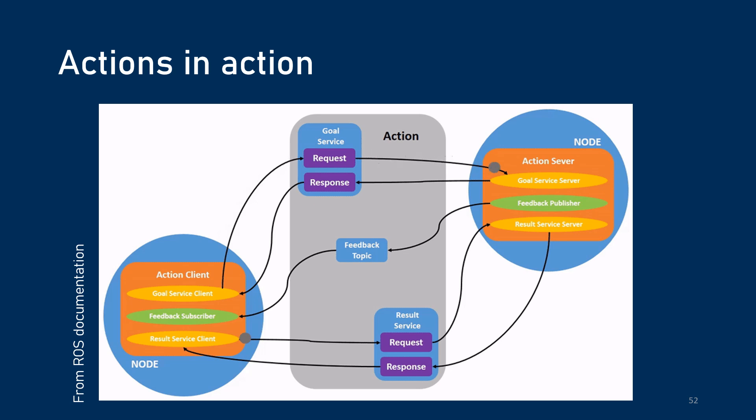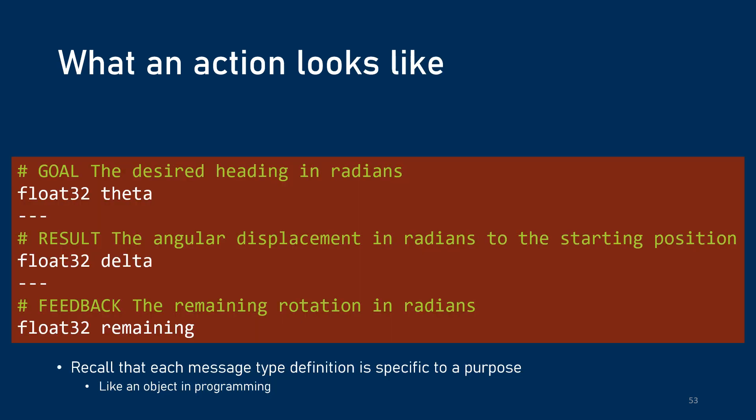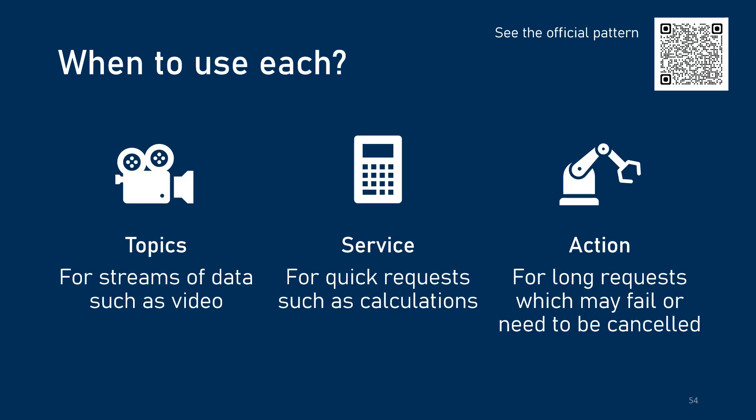While actions are their own thing, under the hood you can see that there are actually services and topics underlying it. An action definition looks very similar to a service, but with an additional definition of the data sent for feedback. So we have three major paradigms in ROS for communication — when do we use each? Topics are best for streams of data, things coming from sensors like video or audio. Services are best for quick requests like calculations or image processing where you just want something returned quickly — you can think of it as a function call almost. And actions are best for things that take a while and might fail or need to be canceled.